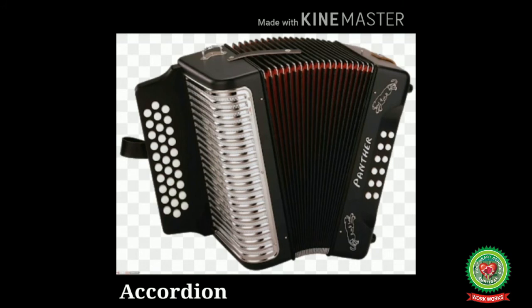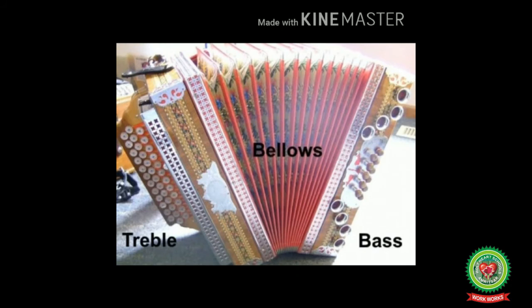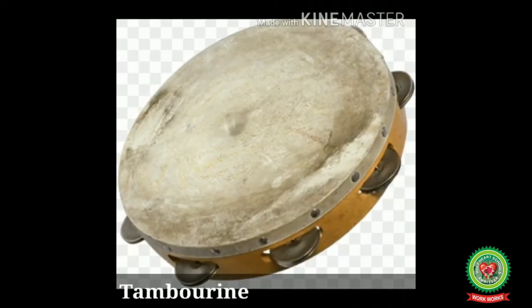Next one is accordion. The accordion is a box-shaped musical instrument invented in Germany. It has keys similar to a piano but is small enough for a person to hold. Sound is created when the keys are pushed while the accordionist expands or compresses the bellows. Keys or buttons are played on the left and right side. The accordion is popular in a variety of music styles around the world today.